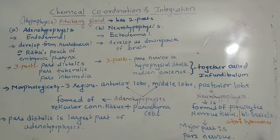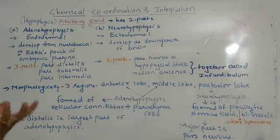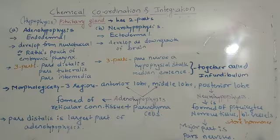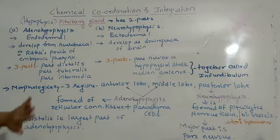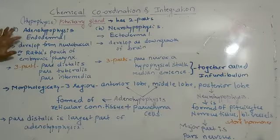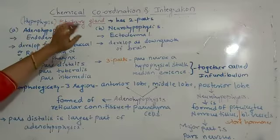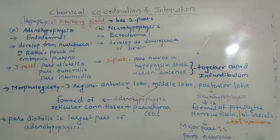The pituitary gland, present within the cranial cavity, has two parts: the adenohypophysis and the neurohypophysis. The adenohypophysis is of ectodermal origin, and the neurohypophysis is of neuroectodermal origin.